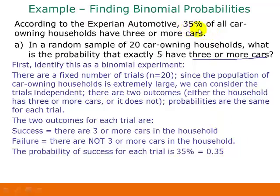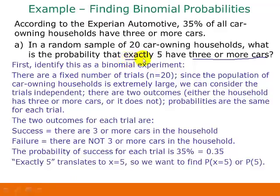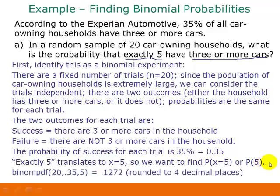Since 35% of households have three or more cars, the probability of success is 0.35. The question asks for the probability that exactly five have three or more cars, so X = 5, and we want P(5). On your calculator, use binomPDF with N = 20, P = 0.35, and X = 5. You should get 0.1272 rounded to four decimal places. Try this on your calculator and make sure you get this value.